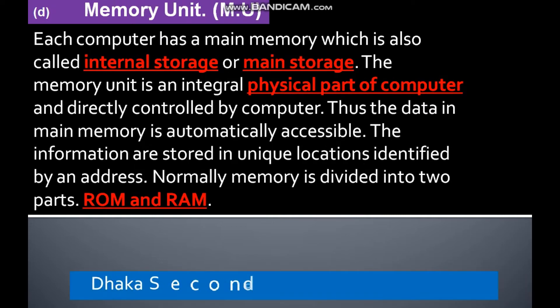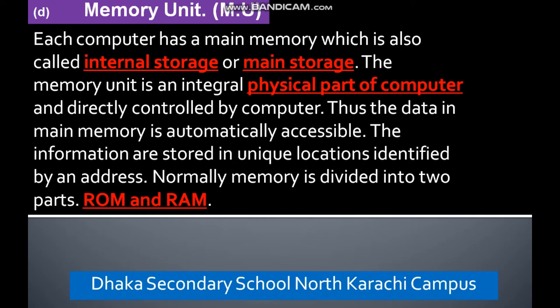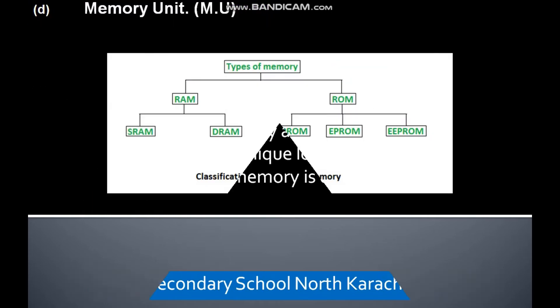Memory Unit. Each computer has a main memory, which is also called internal storage or main storage. The memory unit is an internal physical part of the computer and is directly controlled by the computer. Data in main memory is stored in unique locations identified by addresses. Normally, memory is divided into two parts: ROM and RAM.